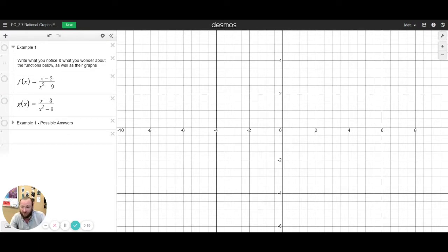It's pretty obvious that they're both rational functions, right? Polynomials on top and bottom. And there's just one subtle change, like we just talked about, between the two. So go ahead and pause the video now and write what comes to mind as you look at these graphs.